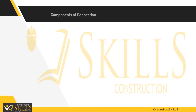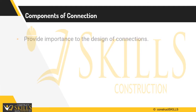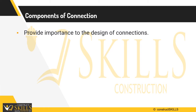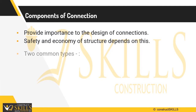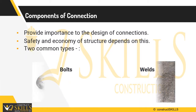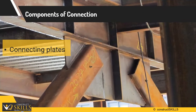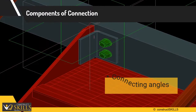There are different components used for connections, and the cost of structural steel consists of a major portion for connections. That is the reason primary importance should be given to the design of connections for safety and economy. In modern times, the most common types of connecting mediums are welds and bolts. Connecting plates are used for connection of primary members; they can be of various shapes and sizes, available in thickness from 5 mm up to 25 mm. Connecting angles are widely used and contain a large variety of shapes, load-bearing capacities, and sizes.